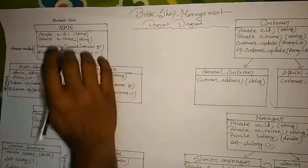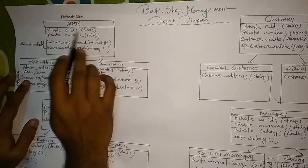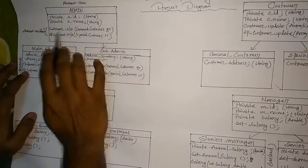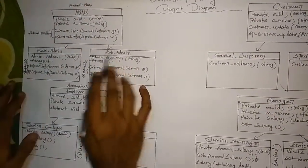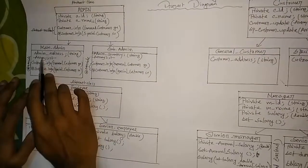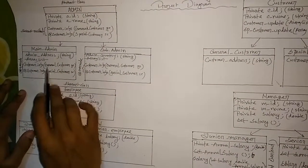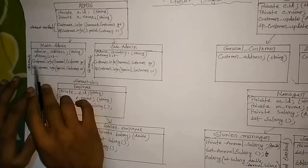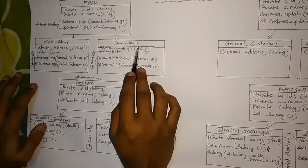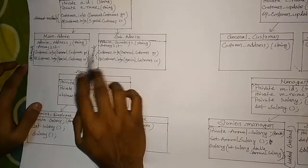Here is the whole diagram. At first there is an admin class which is abstract, and here are two private variables declared in string: admin ID and admin name. Here are two abstract methods: customer info and spcustomer info. Here are two child classes of admin — one is main admin and another is subadmin. In subadmin there is a new variable declared: admin address. In main admin class, here is an error list and two methods: customer info and spcustomer info. In subadmin class, here are also two methods: customer info and spcustomer info. Both methods are overridden.